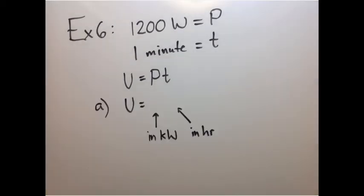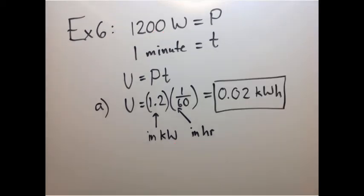In part A, it asks for the energy use in kilowatt hours. So that means we'll need to take our power and convert it to kilowatts and our time and convert it to hours. Since kilo means 1,000, we just move our decimal point over three spots, which gives us 1.2 kilowatts. And I went and wrote one minute as 1/60th of an hour. You could put it as a decimal, but the math actually works out pretty well here. This works out pretty nicely to exactly 0.02 kilowatt hours.